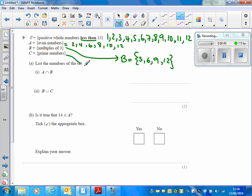And the prime numbers between 1 and 12 are 2, 3, 5, 7, 11. 1 is not a prime number. OK, so first of all we are asked, so this is set A and this is set C. So we're asked for A intersection B, so that's these two sets together.